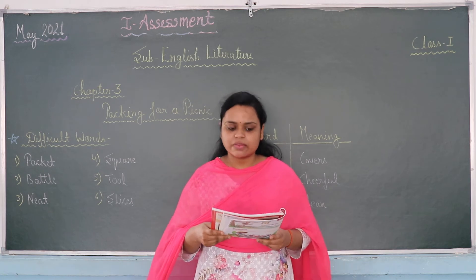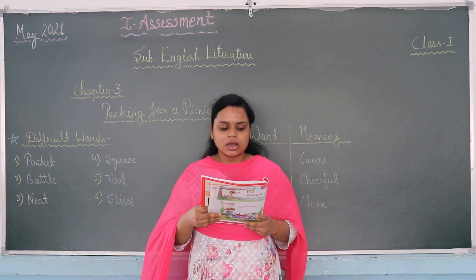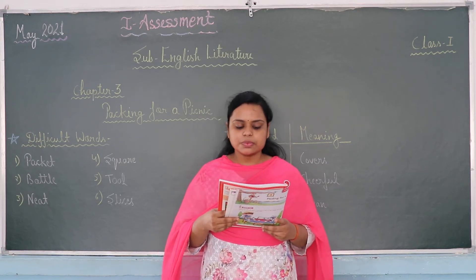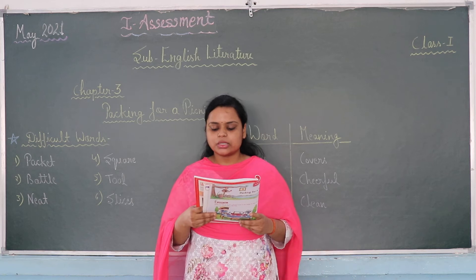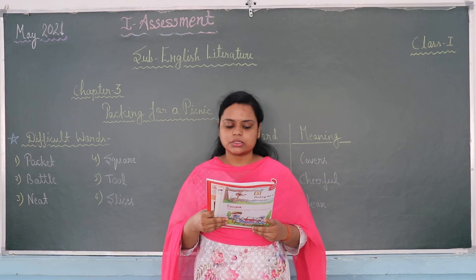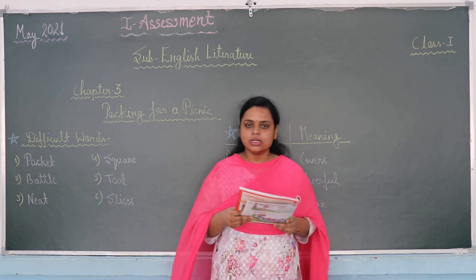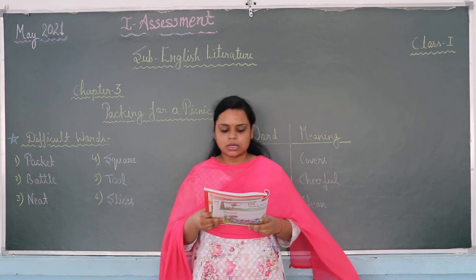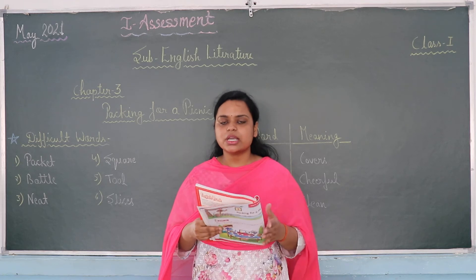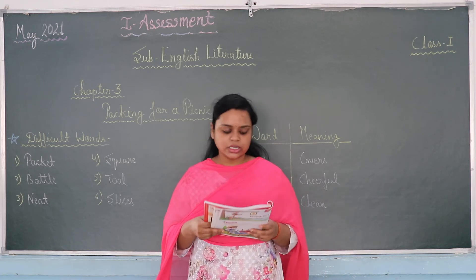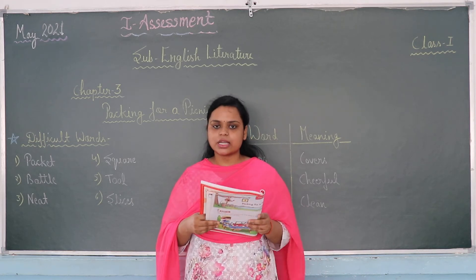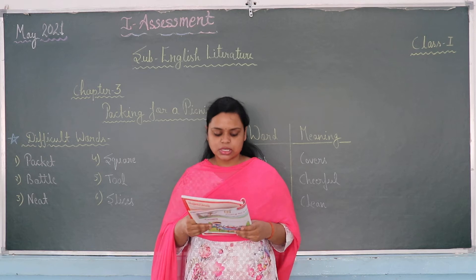Now from page number 17, we are going to start the chapter. Ameena is very happy. She is going for a picnic with her friends. Mother is packing a basket of food for Ameena to carry. She puts in some apples, a packet of biscuits, and a bottle of water. Ameena is a girl who is planning for a picnic with her friends, and her mother is helping her pack — deciding what she should take with her to the picnic.